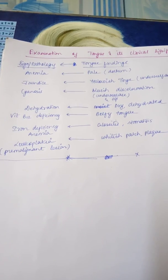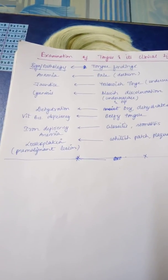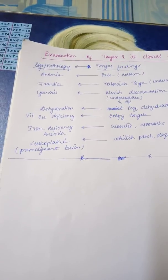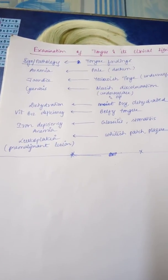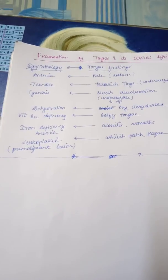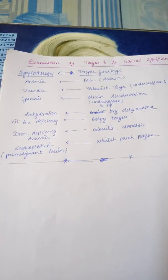Whitish patches or plaques can be found, that is basically leukoplakia. That is a premalignant lesion in case of oral cavity carcinoma or oral cancer. So these are in short the examination of tongue and its clinical significance.